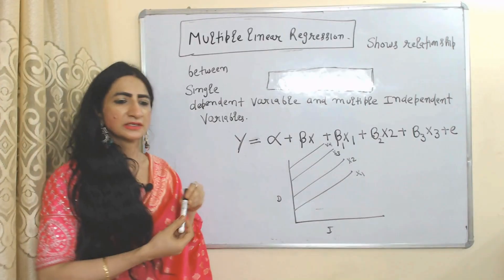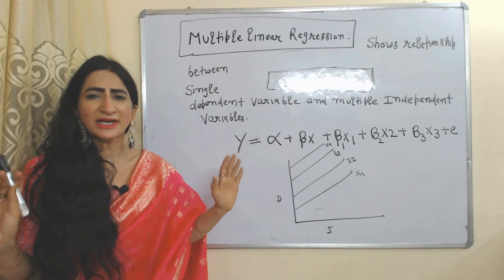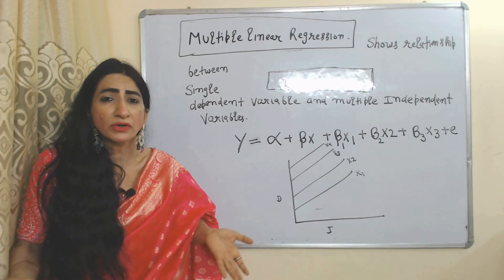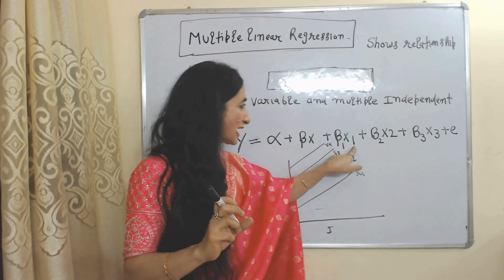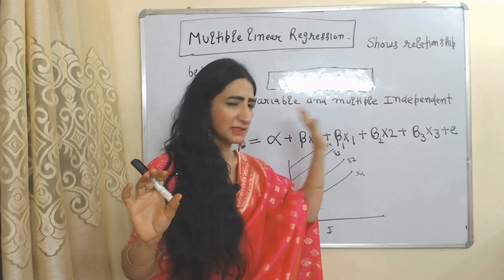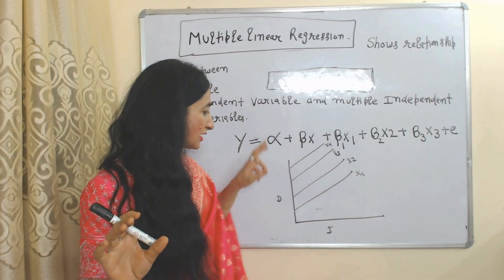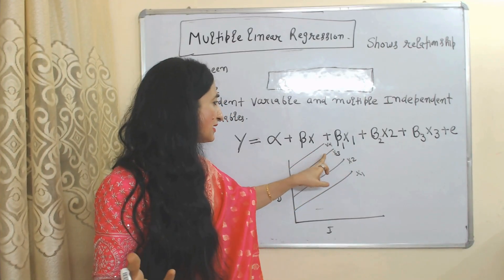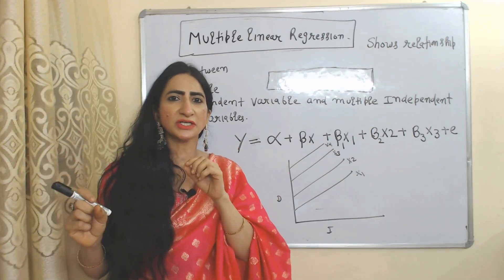Multiple linear regression model shows the relationship between a single dependent variable and multiple independent variables. Here we have more than one independent variable but only one dependent variable. X, X1, X2, X3 are all independent variables. This diagram shows the relationship between the single dependent variable and multiple independent variables — each line shows the relationship of the dependent variable with a different independent variable such as X1, X2, X3, and X4.